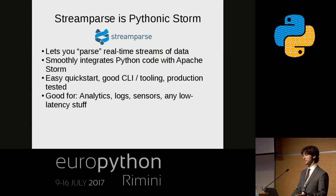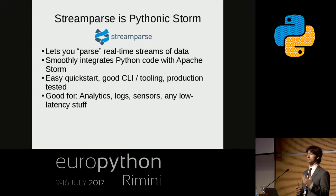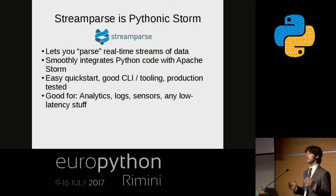StreamParse is Pythonic Storm. It's an open-source toolkit we've developed to help you get off the ground using Storm. As the name implies, it lets you parse real-time streams of data. You can integrate your own Python code with Apache Storm, which runs on the JVM, so there's a multi-lang interface. It's got a great quick start and documentation, good command-line tooling, and it's production-tested. We use it every day — it's very mature and runs the absolute core of our real-time streaming system.